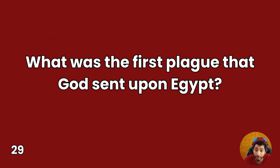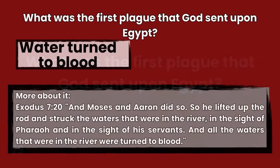Question 29: What was the first plague that God sent upon Egypt? Answer: Water turned to blood. Exodus 7:20 — And Moses and Aaron did so. He lifted up the rod and struck the waters that were in the river, in the sight of Pharaoh and in the sight of his servants, and all the waters that were in the river were turned to blood.